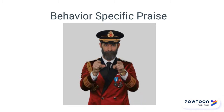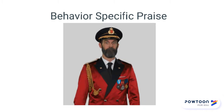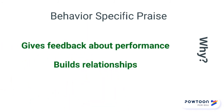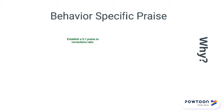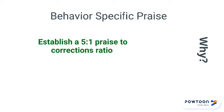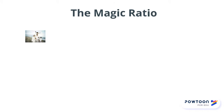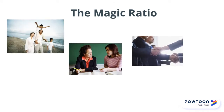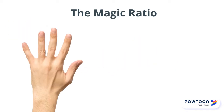Now let's learn about behavior-specific praise. Why should you make behavior-specific praise part of your classroom practice? It's important because it gives students feedback about their performance in class and helps build relationships. When you concentrate on using behavior-specific praise, it can help you establish a five-to-one ratio of praise to corrections. Research has discovered that people who build strong relationships — in families, schools, and business — all use this magic ratio: five instances of praise for every one correction.